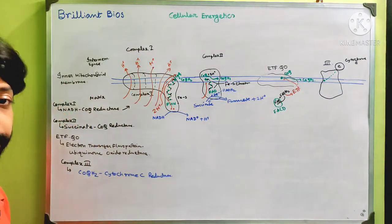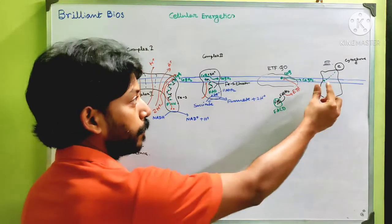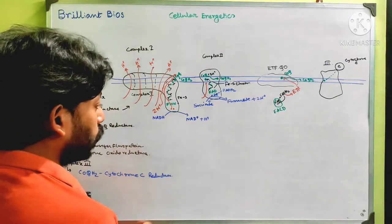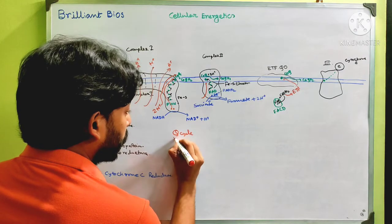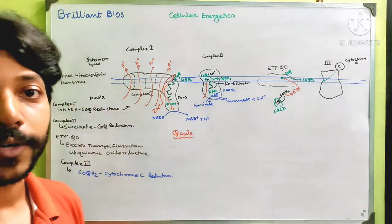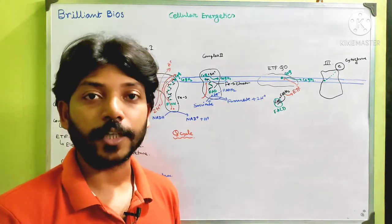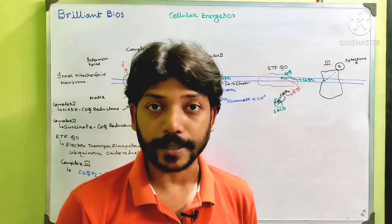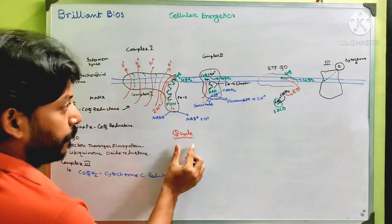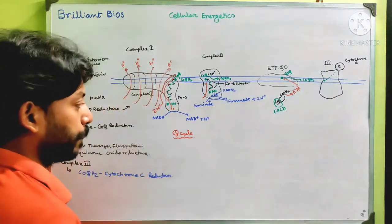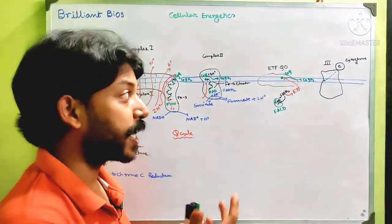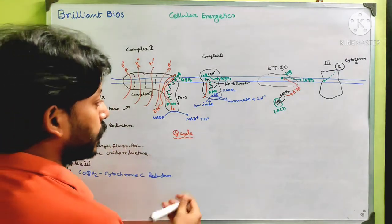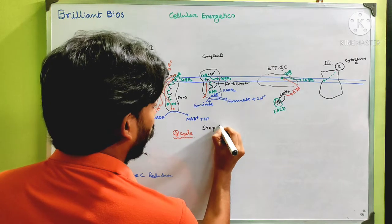To understand the mechanism of electron transportation by Complex 3, you need to know one very important cycle called the Q cycle. This cycle is so important for life that it is evolutionarily conserved across all domains of life — in bacteria, in plants, in animals. Every organism has this Q cycle, and it occurs in Complex 3. To understand it, there are two steps.